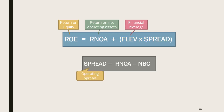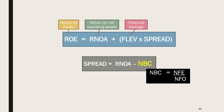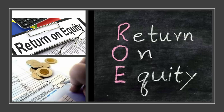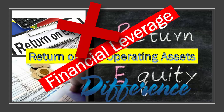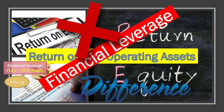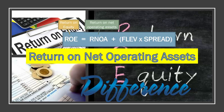Operating spread is the difference between the return a firm can earn on net operating assets and the cost to the firm of borrowing — net borrowing cost or NBC. Net borrowing cost can be expressed as net financial expenses divided by net financial obligations. NBC can be readily calculated from restated financial statements. The key thing to notice is that the difference between return on equity and return on net operating assets is FLEV times spread.